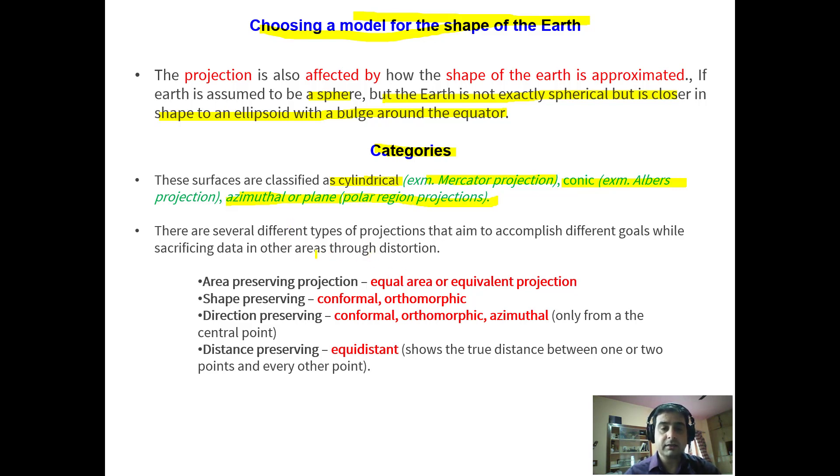Now there are different kinds of projections which aim to accomplish different goals. If you want to have area preserving projection, you call that as equal area or equivalent projection. If you want to have shape preserving, we call it as conformal or orthomorphic. If you want to preserve the direction, we call that as conformal orthomorphic or azimuthal. If you want to preserve distance, we call that as equidistant. So based on the priority, we can choose different kinds of properties and that will conform to different types of projections.